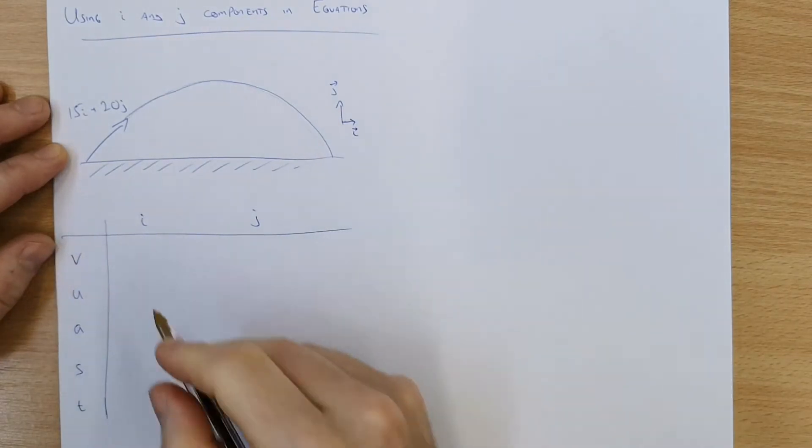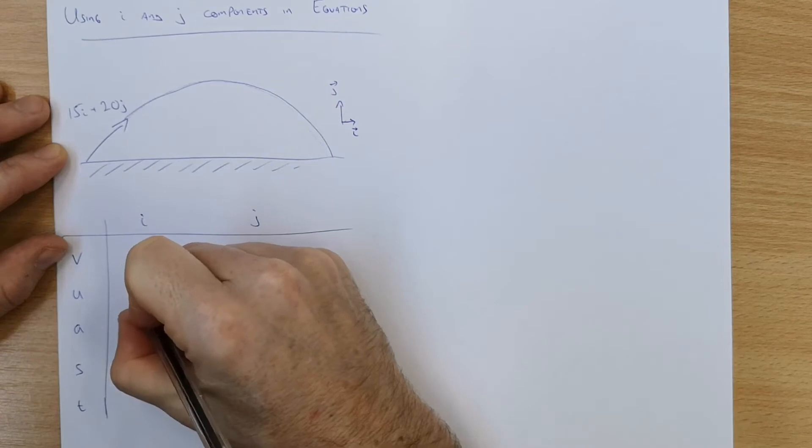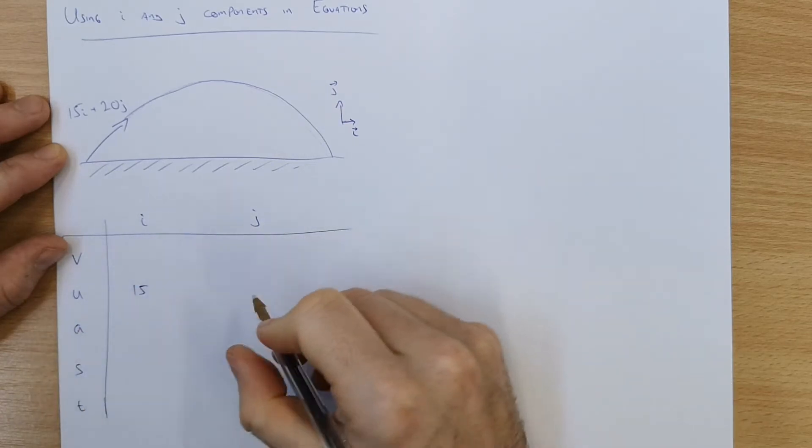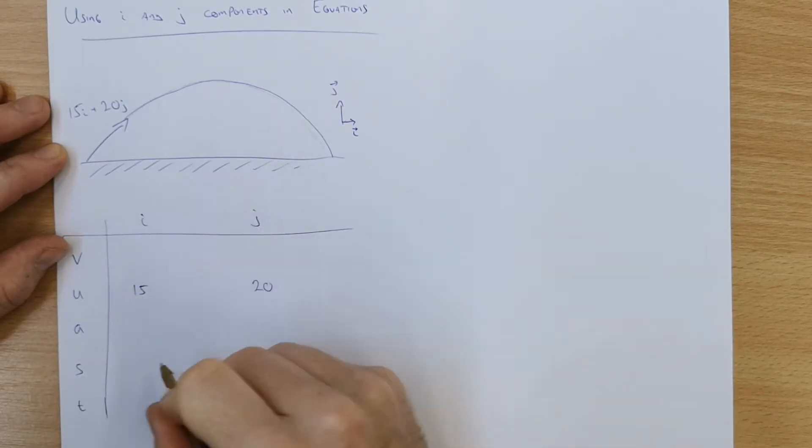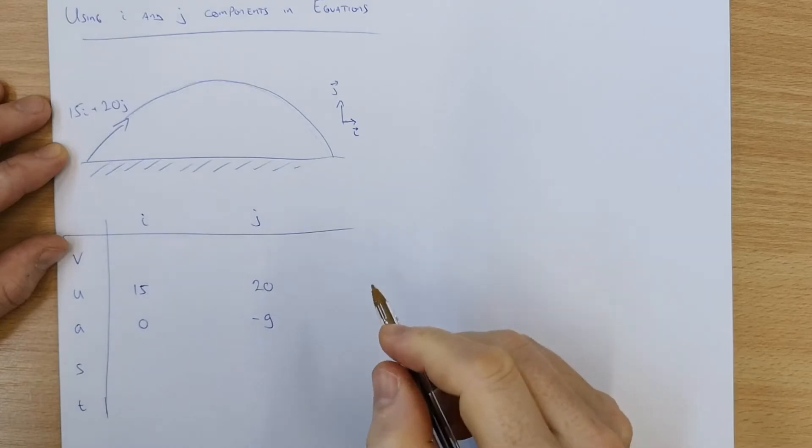Now we're filling the easy ones first. So we have 15 in the i direction here, 20 in the j direction for u. Acceleration is zero in the i direction and is minus g in the j direction.